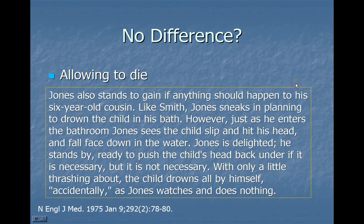Now here's a similar case of allowing to die. Jones also stands to gain if anything should happen to a six-year-old cousin. Like Smith, Jones sneaks in planning to drown the child in his bath. However, just as he enters the bathroom, he sees the child slip, hit his head, and fall face down in the water. Jones is delighted. He stands by, ready to push the child's head back under if necessary, but it's not necessary. The child drowns all by himself, 'accidentally,' as Jones watches and does nothing. This is a case of allowing to die which is clearly morally equivalent to the active killing. So the author's point is: what's the difference? There's a moral equivalence.